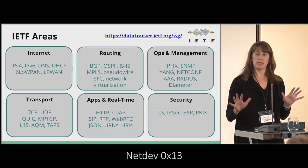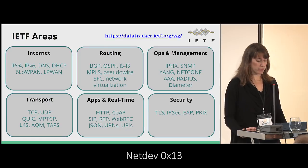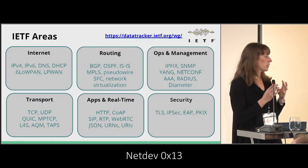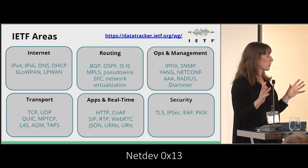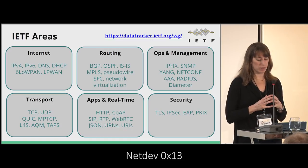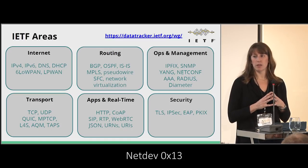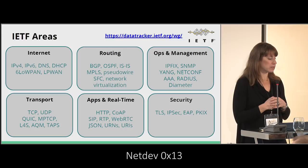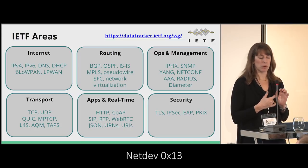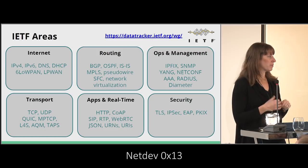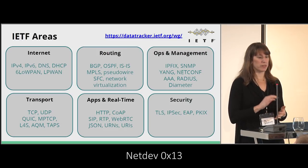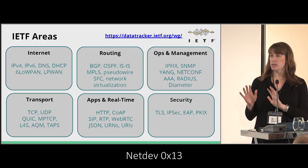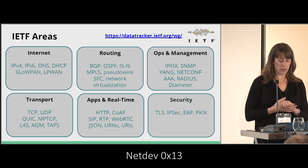Just a little about how the IETF is organized. We organize our work into working groups, which are fairly small and focused in scope. Those working groups divide into six different technical areas: internet routing, ops and management, transport, apps and real-time, and security. You can get a sense of the things you're interested in and where they might lie in those areas.